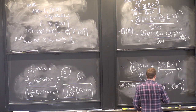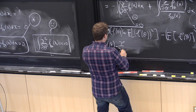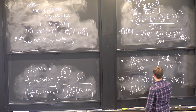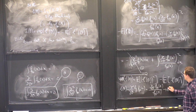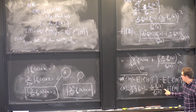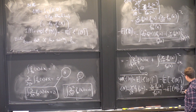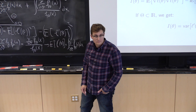What is the expectation of L prime? L prime of theta equals the partial with respect to theta of log f theta of x, which equals the partial derivative of f theta over f theta. When I integrate this against f theta, the f thetas cancel, giving the integral of the partial derivative of f theta dx — which equals 0 by the star equation.